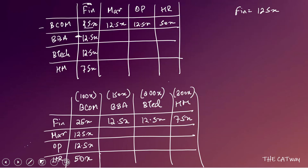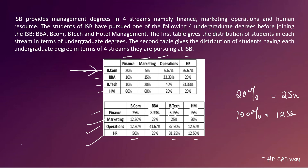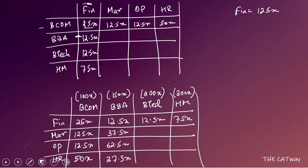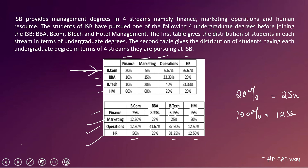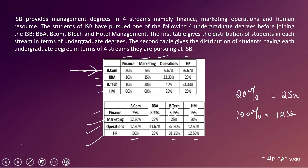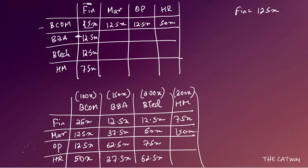Now filling the remaining cells: BBA → Marketing = 25% of 150x = 37.5x; Operations = 41.67% = 62.5x; HR = 25% = 37.5x. BTech → Marketing = 25% of 200x = 50x; Operations = 37.5% = 75x; HR = 62.5x. Hotel Management → Marketing = 50% of 300x = 150x; Operations = 12.5% = 37.5x; HR = 12.5% = 37.5x.